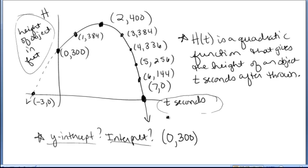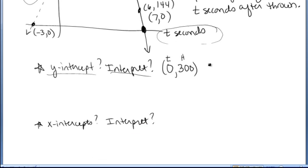If we want to interpret the meaning of that point, remember that the function inputs t and outputs h. So t is 0, h is 300. That is telling us after 0 seconds, or to start, the object is 300 feet high.